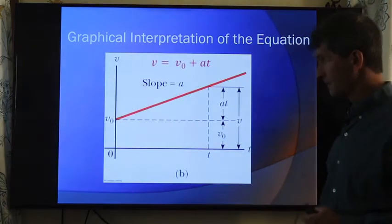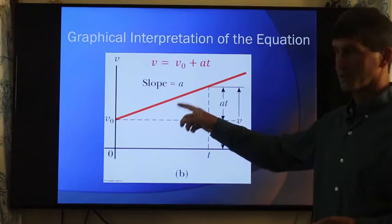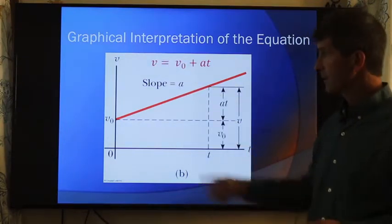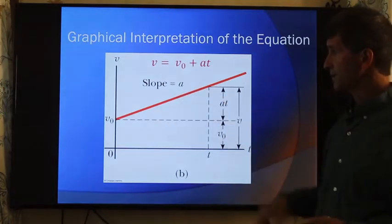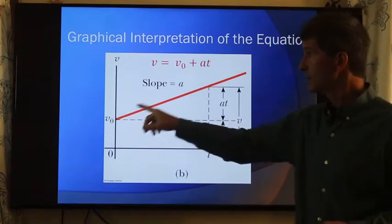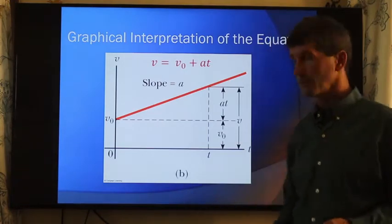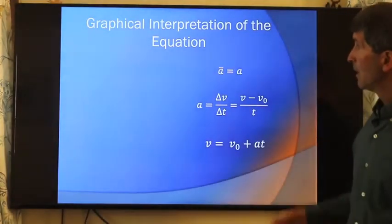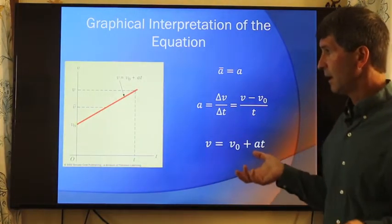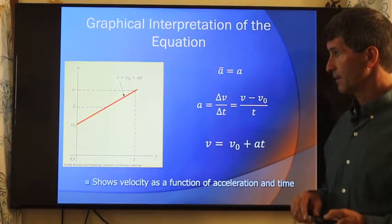If the acceleration is constant, v versus t is a straight line. That makes this really easy. If slope is a and a is a straight line, then we know that the final position will just be the initial position plus the slope times how far you go in the horizontal direction. That one's easy, of course. So again, looking at the graphical interpretation, there's nothing hard about that equation right there.